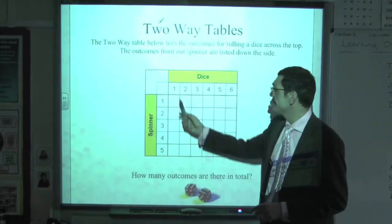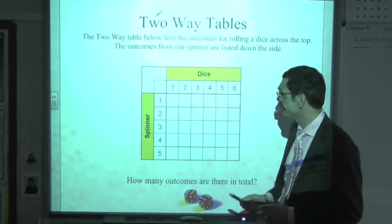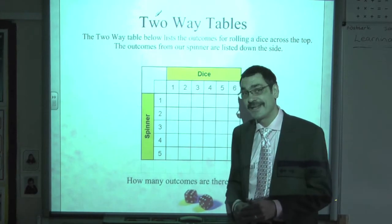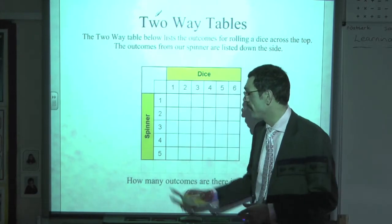So the outcomes for our six-sided dice: 1, 2, 3, 4, 5, and 6. And for our five-sided spinner, a pentagonal spinner: 1, 2, 3, 4, and 5.